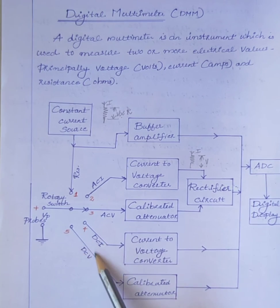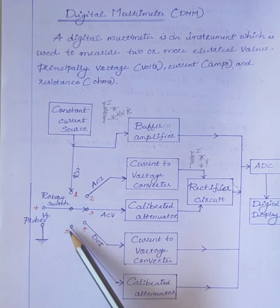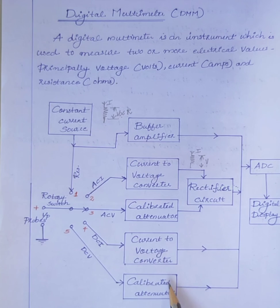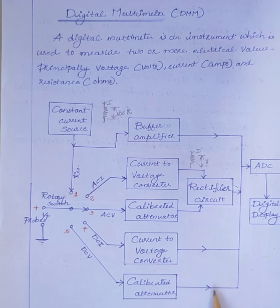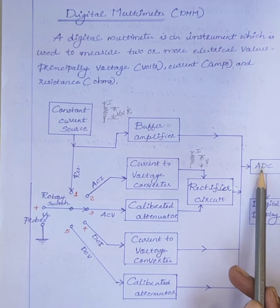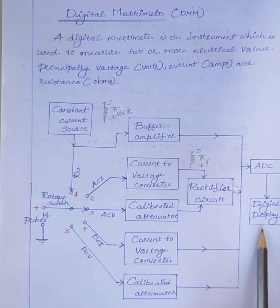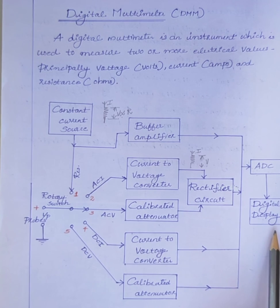Next is the measurement of DC voltage. For that, the rotary switch is connected to terminal 5. The DC voltage is given to the calibrated attenuator and directly given to the analog to digital converter, then displayed on the digital display.